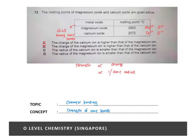We don't explicitly learn the trend for ionic radius, so we need to infer from the melting points. The fact that magnesium oxide has a higher melting point means its ionic bond is stronger, which means the magnesium ion must be smaller than the calcium ion. Therefore, the answer is D.